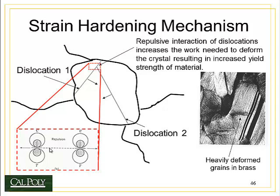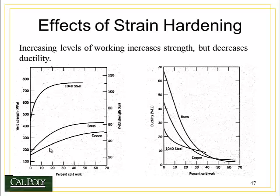If they had exactly the opposite orientation, they would actually annihilate one another, resulting in a complete extra plane of atoms and no defect. But this is very unlikely — it's much more common that the two dislocations will not line up properly and will repel each other.